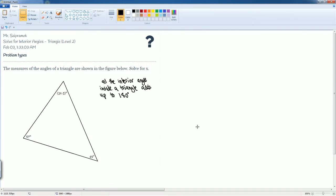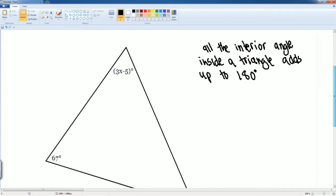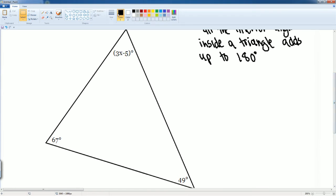Again, we set up the equation knowing that all the interior angles within a triangle adds up to 180 degrees. We have the following angles here. We have 67 degrees. We're going to add that to the 3x minus 5. Then we add that to 49 and that's all going to be equal to 180 degrees.